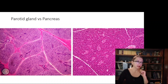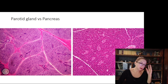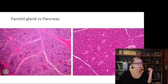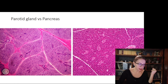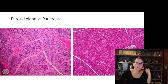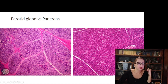The next pair is the parotid gland versus the pancreas — very similar glands because both produce proteins, which is why their cells are stained in a basophilic, purple color. The first criterion helping you distinguish parotid from pancreas is the presence of striated ducts.